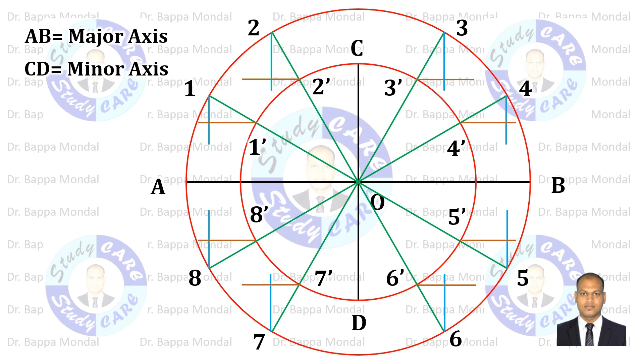Now join all the intersecting points along with ABCD using a French curve. We will get the ellipse.